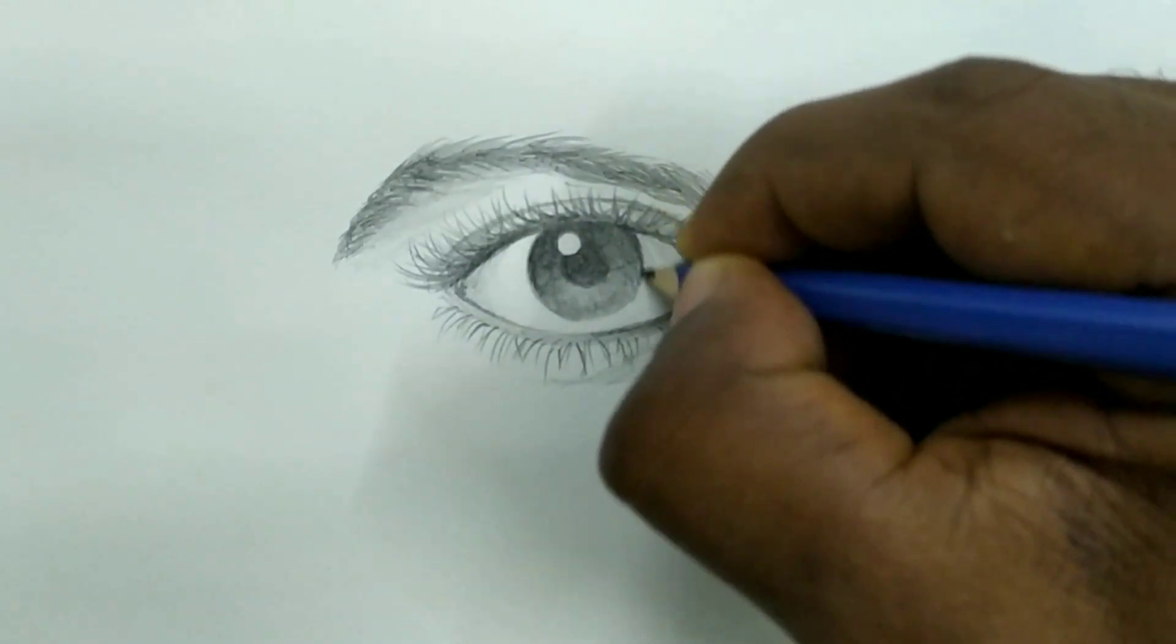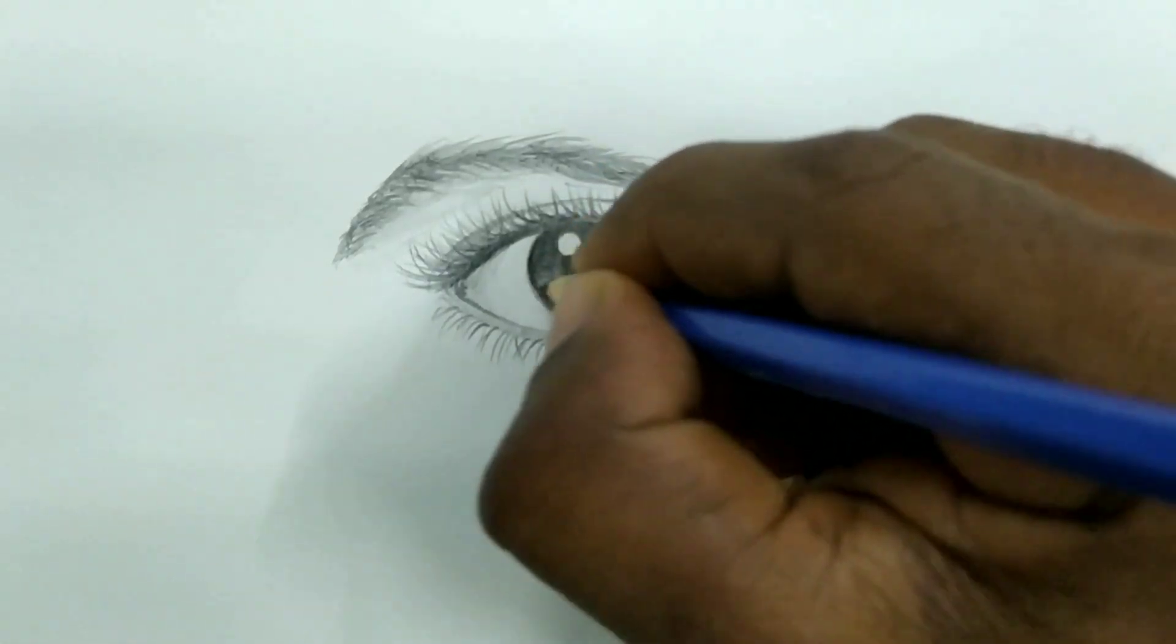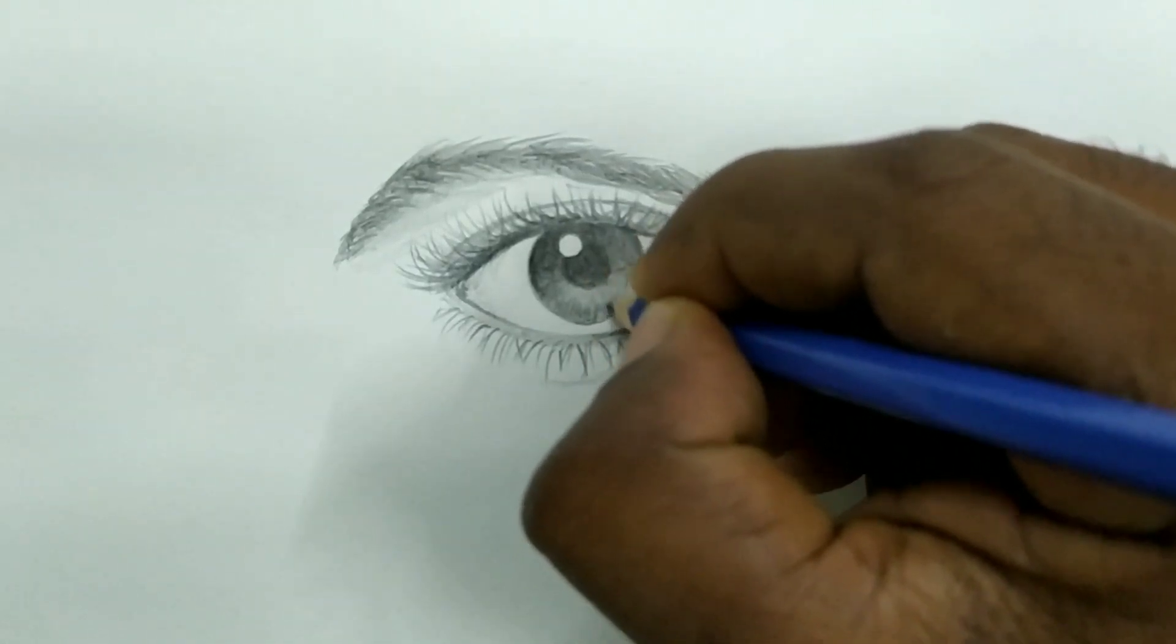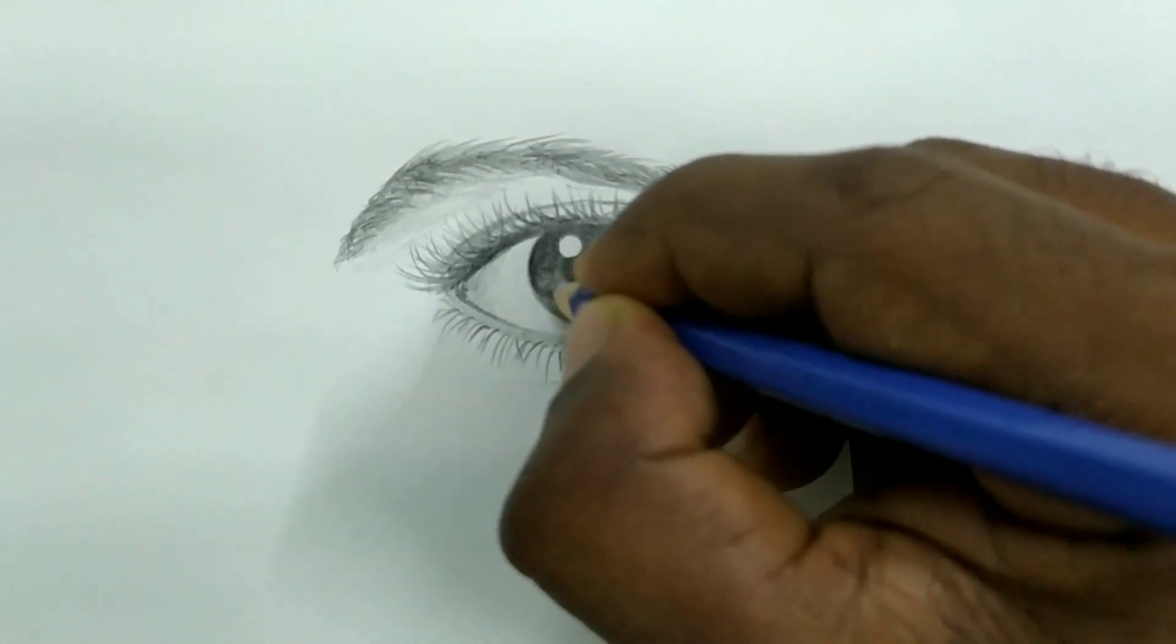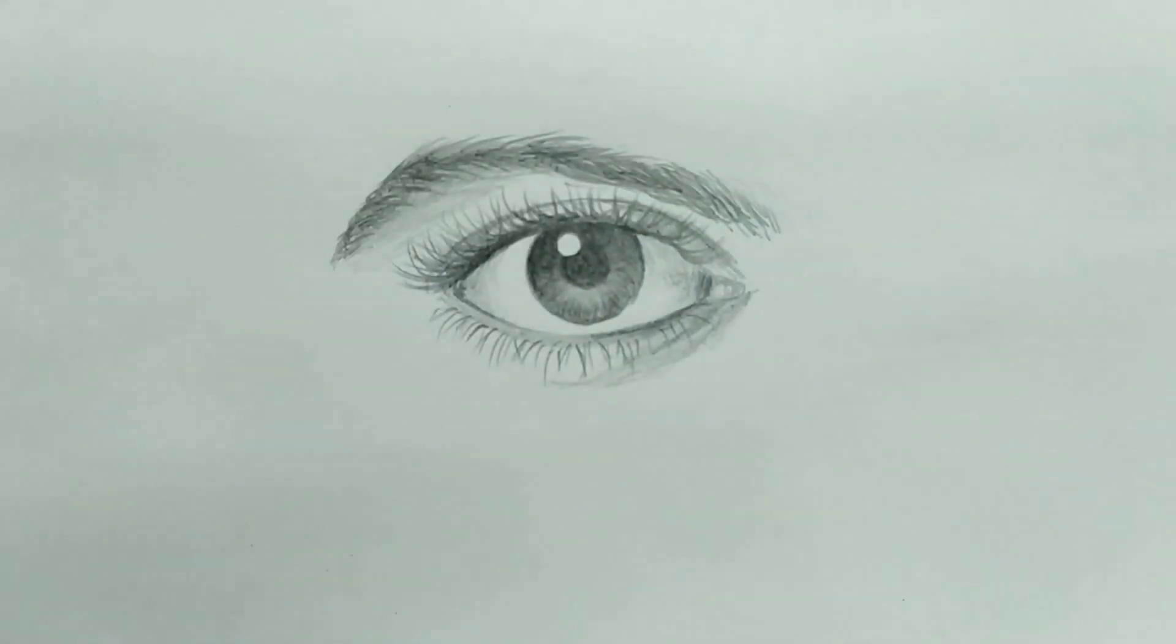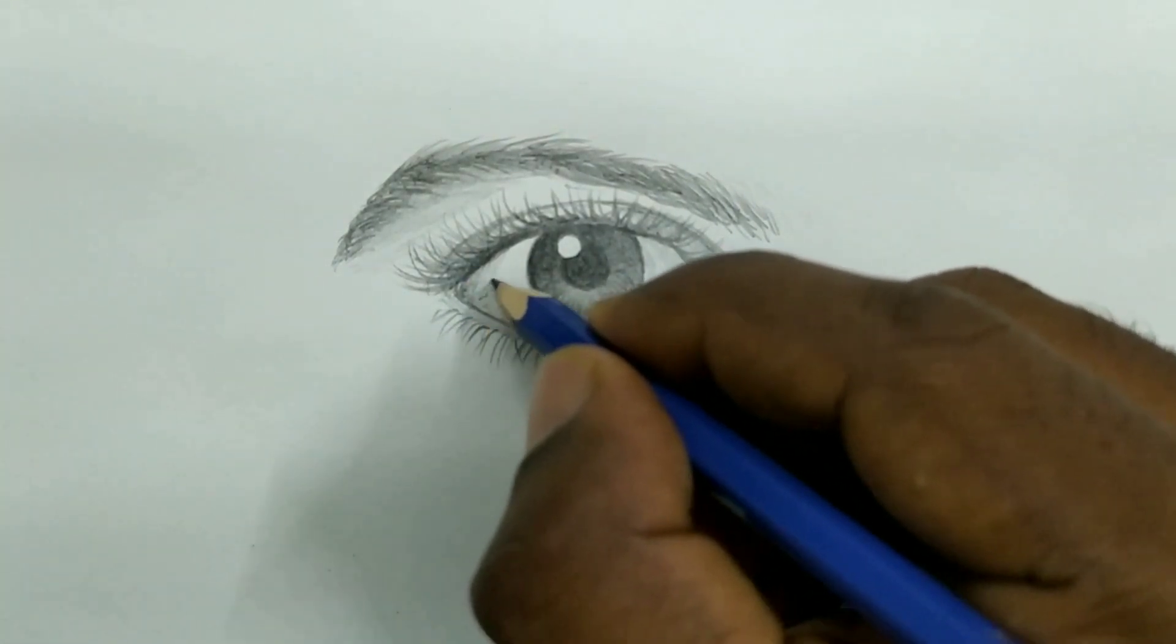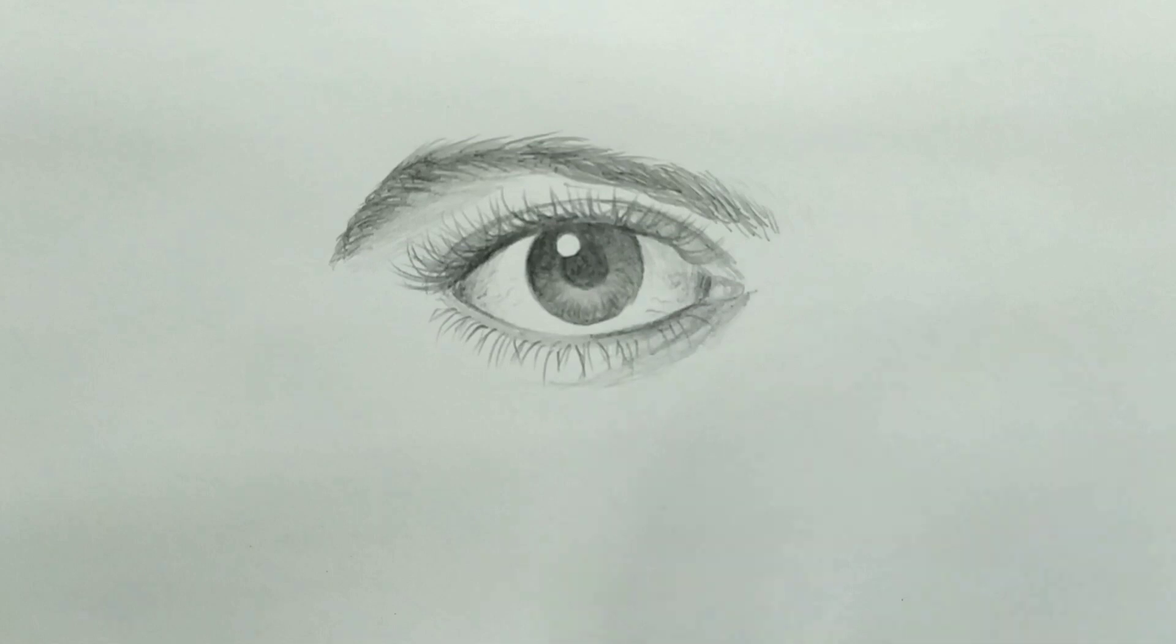Finishing touches with the iris. I am giving small lines over there so that the iris looks natural. Adding very minute lines to represent the blood vessels in the eyes. Very minute lines, okay.